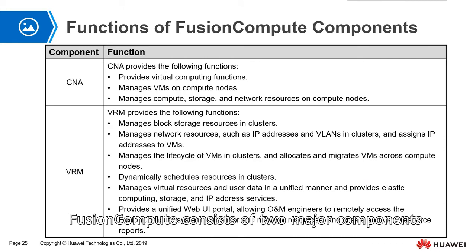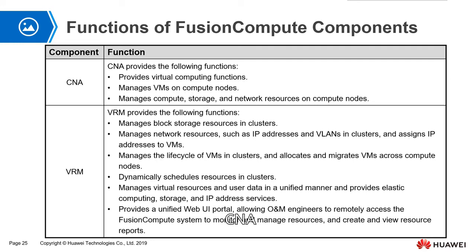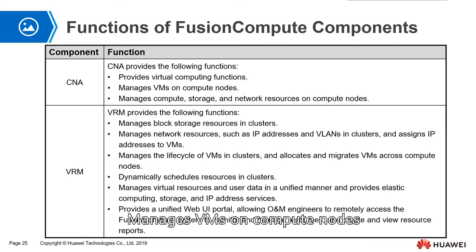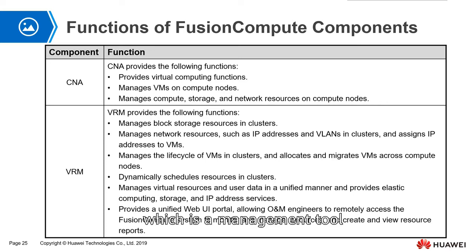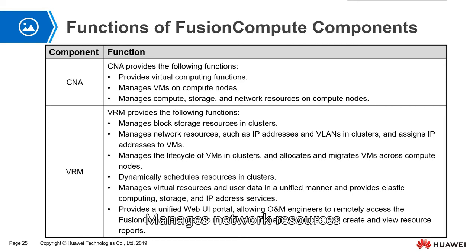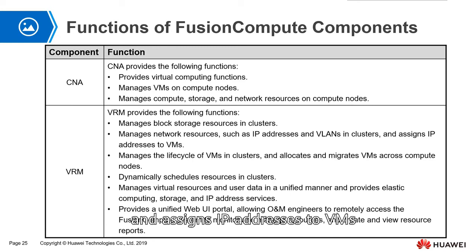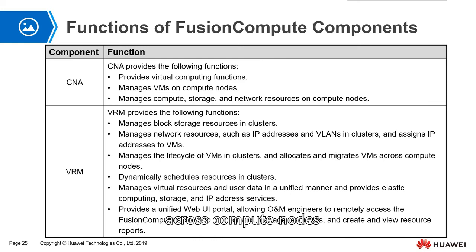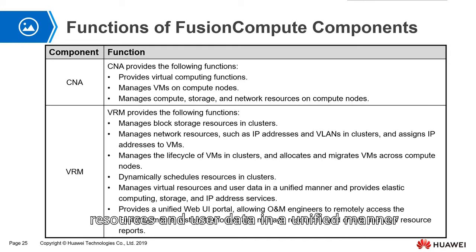Fusion Compute consists of two major components. The first is CNA, which provides virtual computing functions and manages block storage resources in clusters. The other is VRM, which is the management tool. VRM provides the following functions: manage block storage resources in clusters; manage network resources such as IP addresses and VLANs in clusters and assign IP addresses to VMs; manage the lifecycle of VMs in clusters and allocate and migrate VMs across compute nodes; and dynamically schedule resources in clusters. It also manages virtual resources and user data in a unified manner, and provides elastic computing, storage, and IP address services.